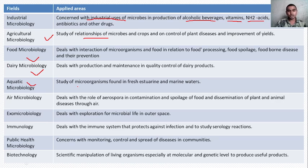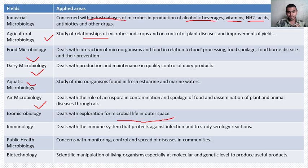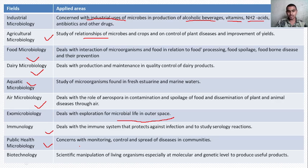Aquatic microbiology is the study of microorganisms found in freshwater and marine waters. Air microbiology deals with the role of aerospora in contamination, spoilage of food, and dissemination of plant and animal diseases through air. Exo-microbiology deals with the exploration of microbial life in outer space — for example, the tardigrade organism has the ability to live in outer space without air. Immunology deals with the immune system and serology reactions. Public health microbiology concerns monitoring and control of the spread of disease in communities. Biotechnology is the scientific manipulation of living organisms, especially at the molecular and genetic level, to produce useful products.